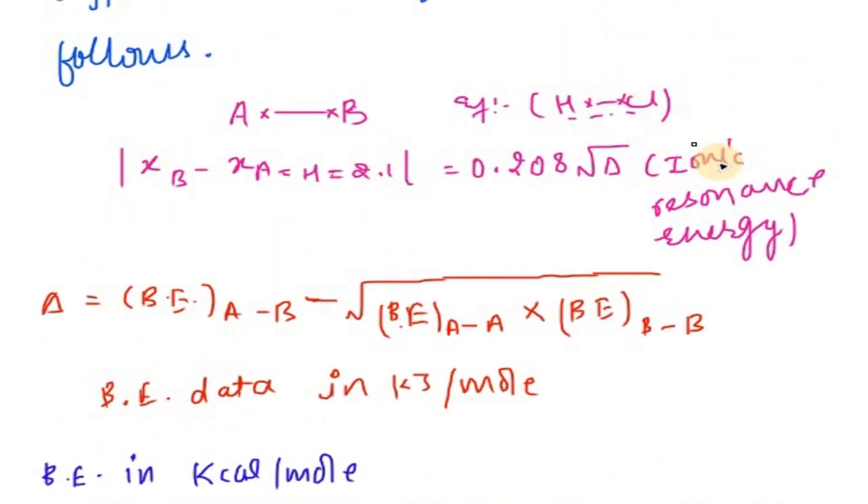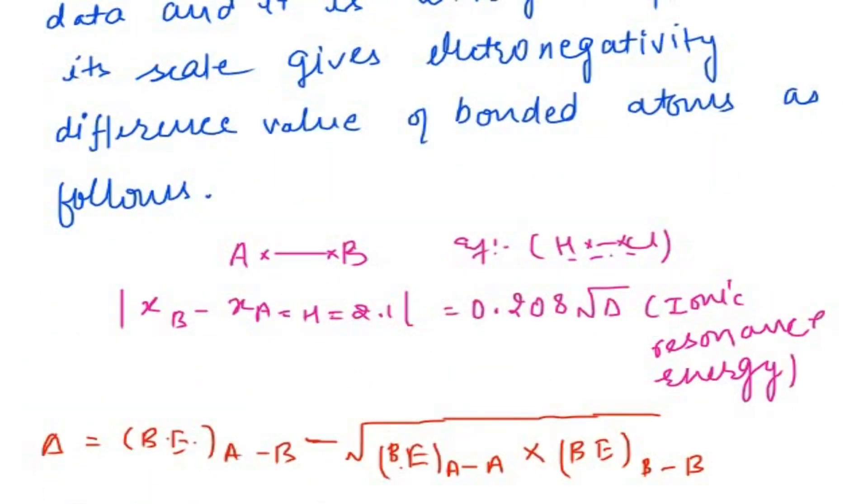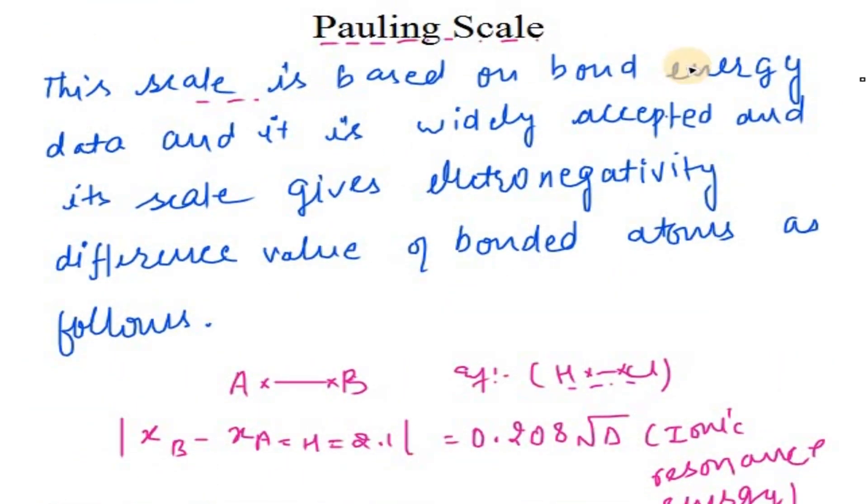How do we know the value that we came in the Pauling scale? We need to know the bond energy, the bond dissociation energy. That's how we deal with the Pauling scale.